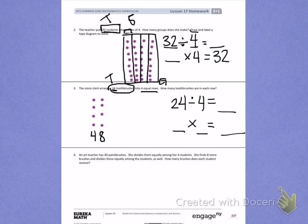Number 4. An art teacher has 40 paintbrushes. She divides them equally among her 4 students. She finds 8 more paintbrushes and divides these equally among the students as well. How many paintbrushes does each student receive? Well, the art teacher has 40 paintbrushes, which is my total. She's dividing them between 4 students. Those are the 4 students she has, which are her groups.